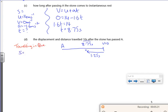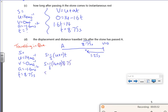I don't know how far it went. So U was 14, V is 0 because it stopped, A is minus 1.6, T is 8.75. So I use the easiest one for S, which is, for me, S equals half U plus V times T. So half of 14 plus 0 times 8.75. So that's 7 times 8.75, which gives me 61.25 meters. So that's the total distance I've gone forward.